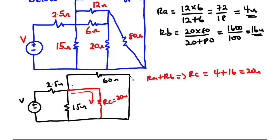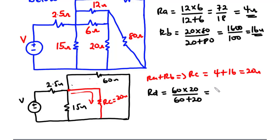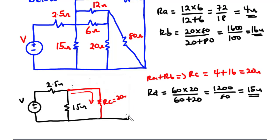Focusing on this loop, we can go through it without passing through any circuit element except Rc and the 60-ohm resistor, so they are connected in parallel. Let Rd be their combined resistance: 60 times 20 divided by 60 plus 20 equals 1200 over 80, which gives 15 ohms. So Rd equals 15 ohms. We clear the 60-ohm resistor and Rc and introduce Rd of 15 ohms.